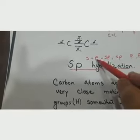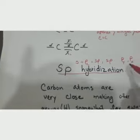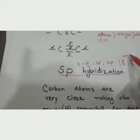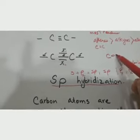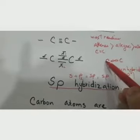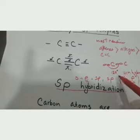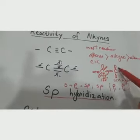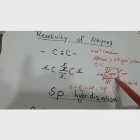The triple bond in alkynes is explained by sp hybridization, where 1s and 1p orbitals combine to form 2 sp hybrid orbitals. The remaining 2p orbitals — py and pz — remain unhybridized and stay perpendicular to the plane of the hybrids. The two sp hybrid orbitals form a sigma bond with a 180-degree bond angle, and the two unhybridized p orbitals overlap to form two pi bonds.